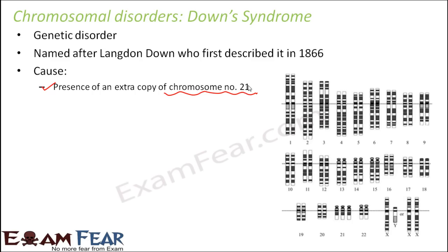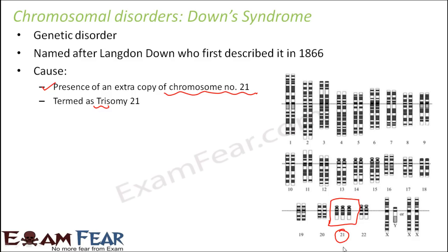If you look at all 46 chromosomes present in the human body, you see that all of them are paired except chromosome 21 — in Down syndrome, you have 3 copies of it. That is why it is also known as Trisomy 21. Trisomy means 3 chromosomes, and it happens at chromosome number 21.